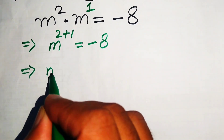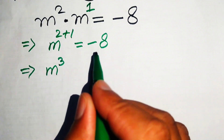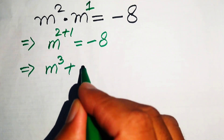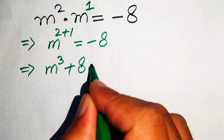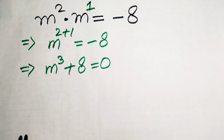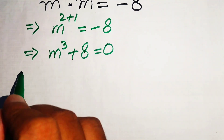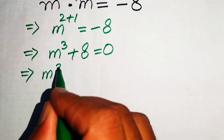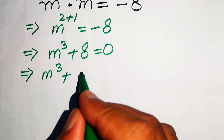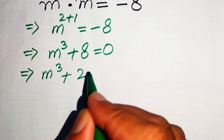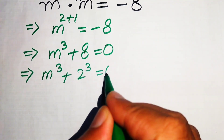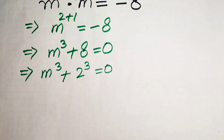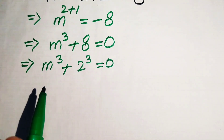This becomes m to the power of 3. Now we move minus 8 to the left-hand side, so it becomes plus 8 equals 0. We rewrite this equation as m cubed plus 8, and we write 8 as 2 cubed, giving us m cubed plus 2 cubed equals 0.